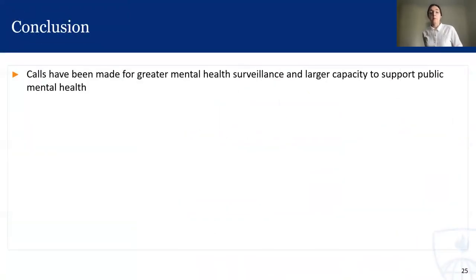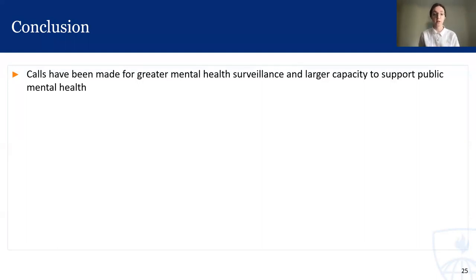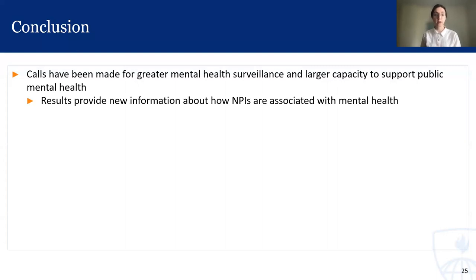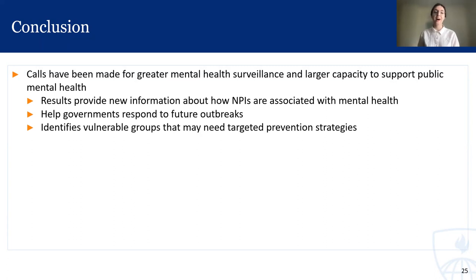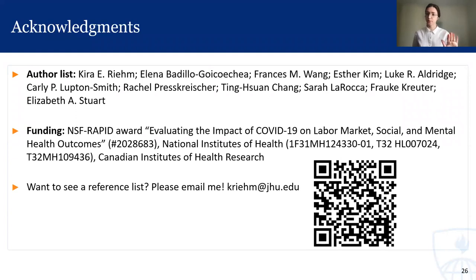Just to conclude, I think what this study really illustrates is the capacity that we have for mental health surveillance in the population. Indeed, calls have been made for this across the pandemic and generally for a larger capacity to support public mental health. What I think our results provide is interesting new information about how non-pharmaceutical interventions are associated with mental health. I think they can help governments respond to future outbreaks, and they also help identify vulnerable groups that may need targeted prevention strategies. That's the take-home message. I also have the author list here for the excellent collaborators I worked with on this publication, along with our funding sources. The QR code on the screen will take you right to the publication, which is open access — free and readily available for you to download and read.